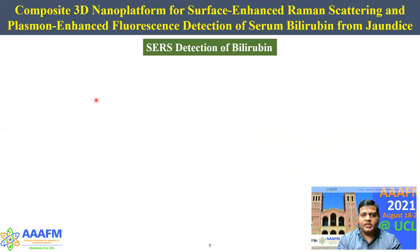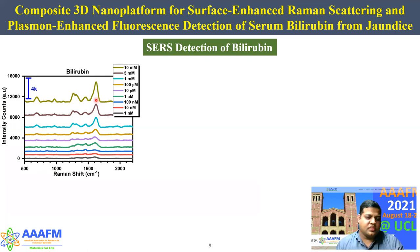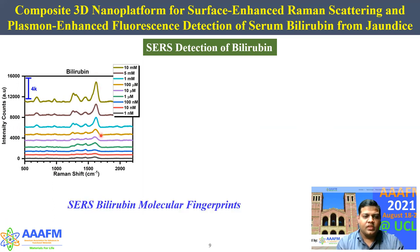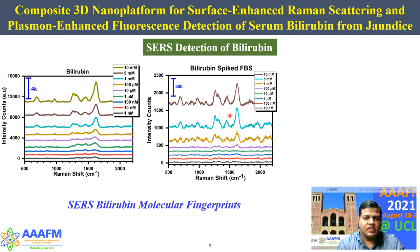We then went on to detect bilirubin directly. To get a molecular fingerprint from bilirubin, we varied the concentration of bilirubin and analyzed the nature of the spectra. This is the SERS bilirubin molecular fingerprint. We then spiked bilirubin with fetal bovine serum and also observed the similar nature of the bilirubin molecular fingerprints in the SERS spectra.